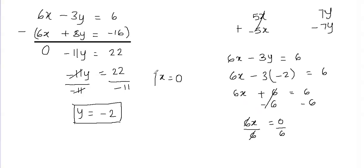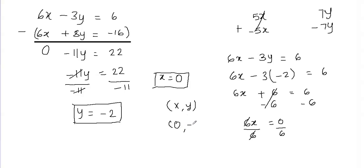I have my value of x and my value of y. Writing the final answer as an ordered pair — the x-coordinate comes first, then the y-coordinate. My x-coordinate is 0 and my y-coordinate is negative 2, so the solution for this system of equations is (0, −2).